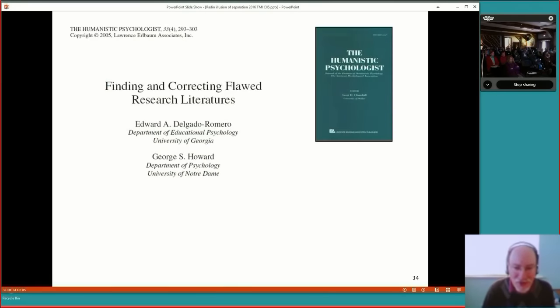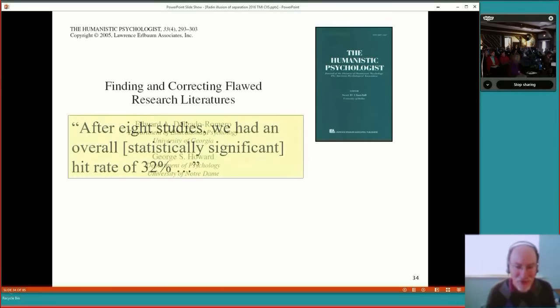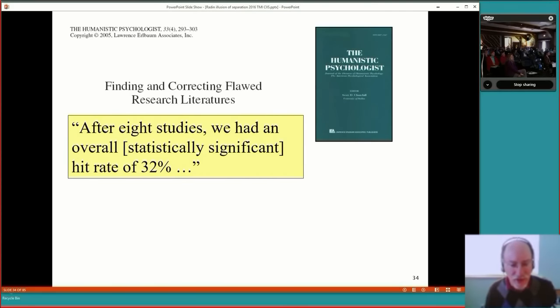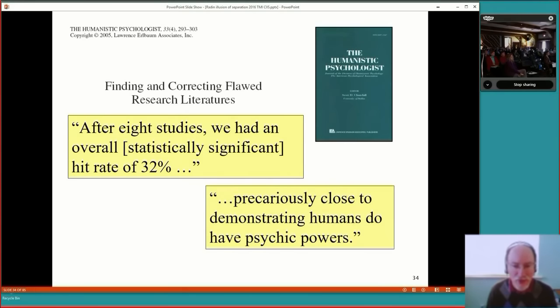Well, in 2005, two psychology professors, both of whom said explicitly in their article that they did not believe in any kind of psychic ability, they, to their credit, did this same kind of experiment, the Gansfeld experiment, and they reported that after eight studies, we had an overall statistically significant hit rate of 32%, which is the same hit rate that we've seen after 40 years of doing this experiment. But this was precariously close to demonstrating humans do have psychic powers, so they didn't believe their own results.